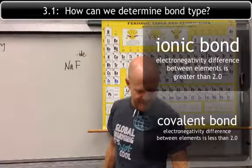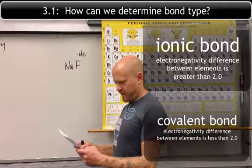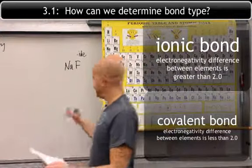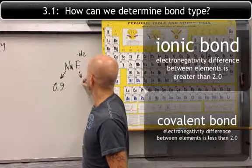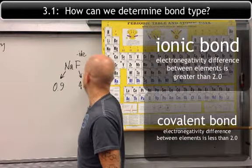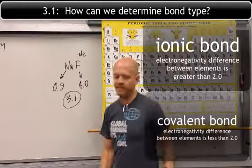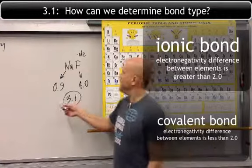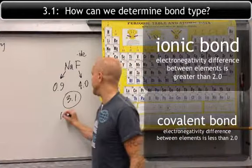So we look at sodium's electronegativity value, and it is 0.9. And again, fluorine is 4.0, with a difference of 3.1. This bond, because it is greater than 2.0, is considered to be ionic.